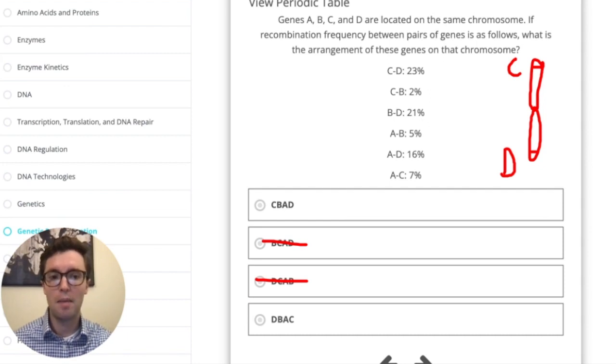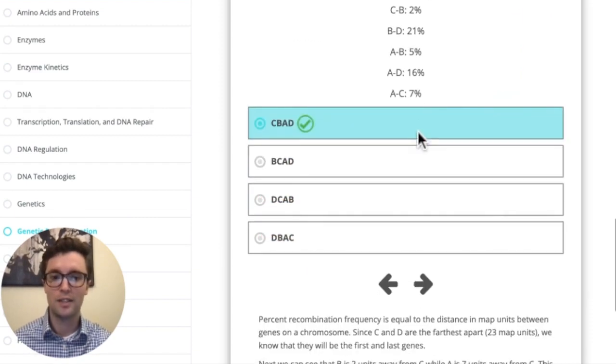So again, the exact mapping doesn't really matter here. It's mostly all just relative. So let's draw A closer to D than B. Now let's see. So we've got C, B, A, D. And look, that's an answer choice right here. Awesome.